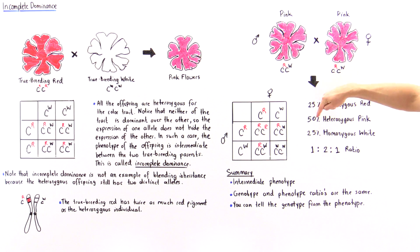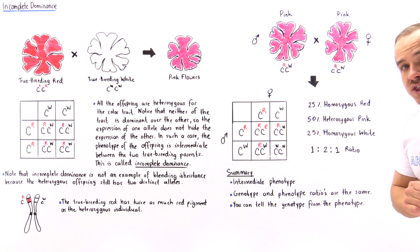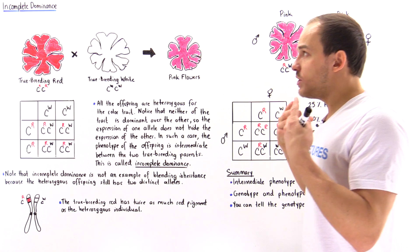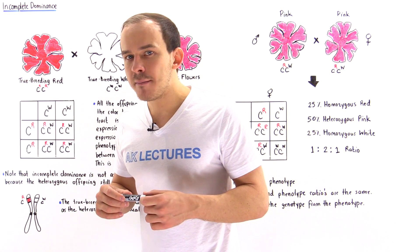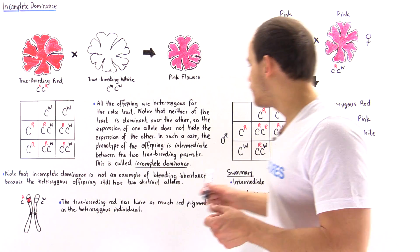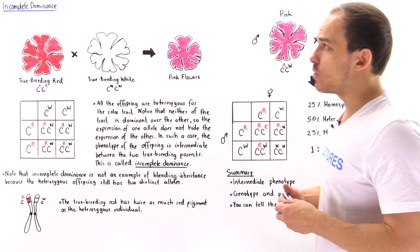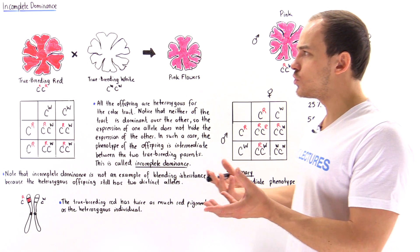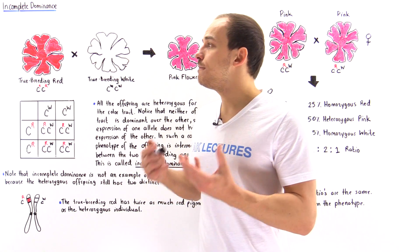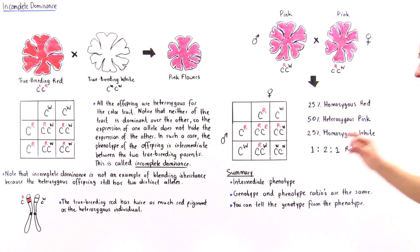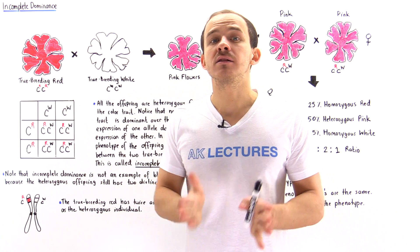We see a 25:50:25 — or one-to-two-to-one — ratio of phenotypes. If we examine the genotypes, we also see a one-to-two-to-one ratio of genotypes. We conclude that whenever we're dealing with incomplete dominance, the genotype ratio of the offspring is exactly the same as the phenotype ratio. This is not the same thing we see with complete dominance, where the genotype ratio is not the same as the phenotype ratio. In incomplete dominance, you can actually tell exactly what the genotype is directly from the phenotype.